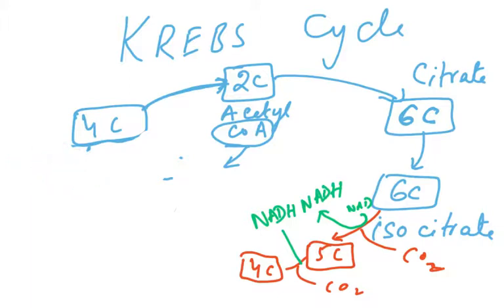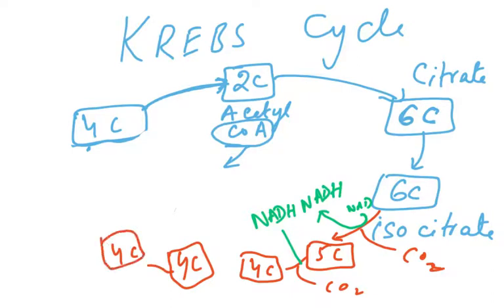In the Krebs cycle: four carbon plus two carbon forms six-carbon citrate; six-carbon citrate forms six-carbon isocitrate (because that makes it more reactive). Then you have five carbon, then five carbon to four carbon. The four carbon continues — you have to write this five times in total — and the cycle regenerates oxaloacetate.